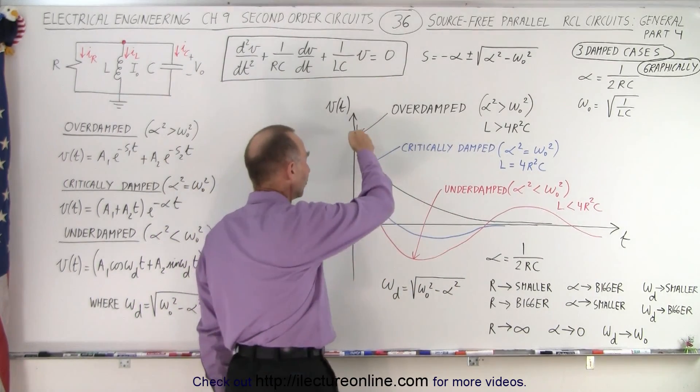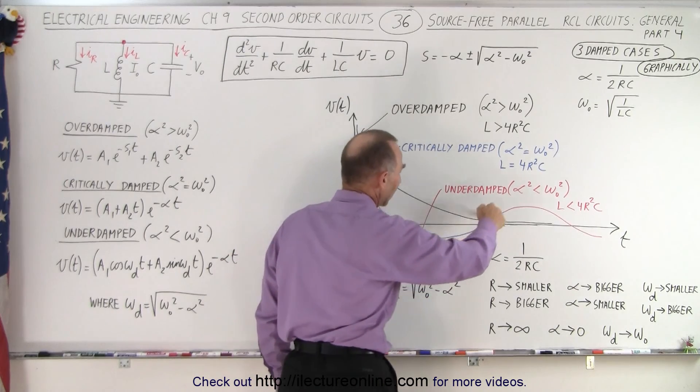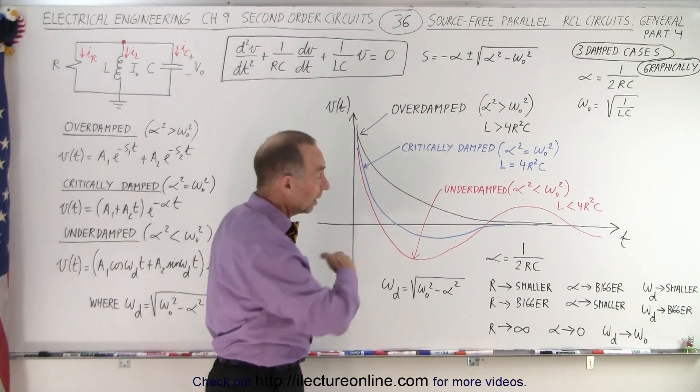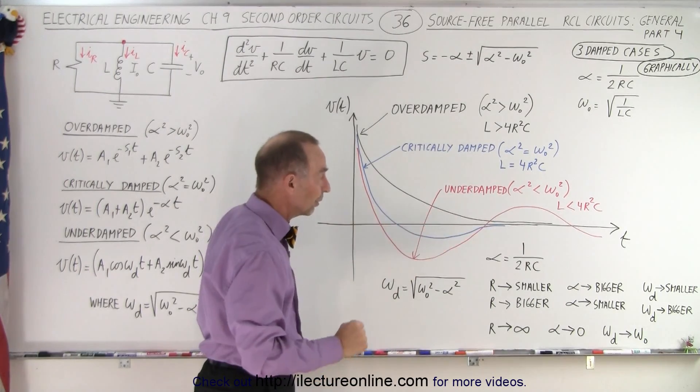In the underdamped case, the voltage goes across the zero, comes back, goes positive, negative, positive, negative, and then depending upon how much damping there is, it will go for a while before it comes to a halt.